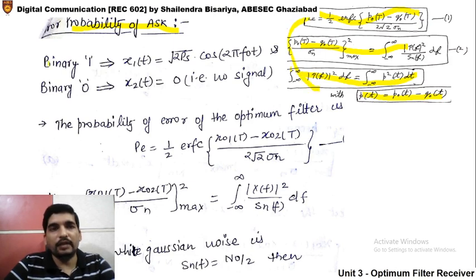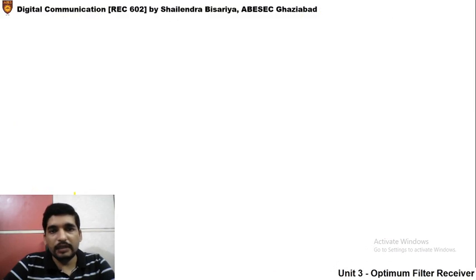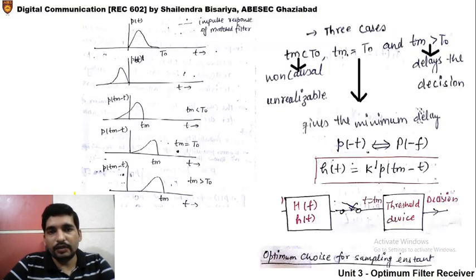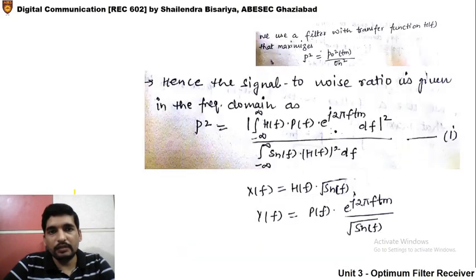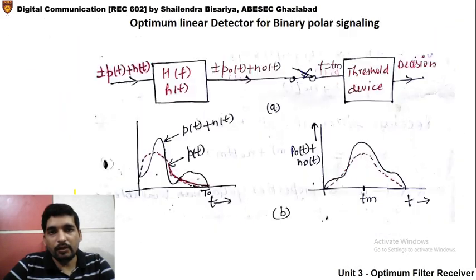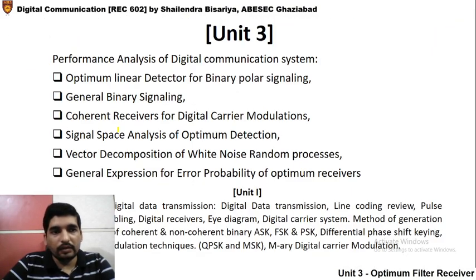As we already did one case in the last lesson, this portion of the derivation is now finished. We will next discuss the correlation receiver, and signal space analysis will be covered in the next lecture. Thank you very much.